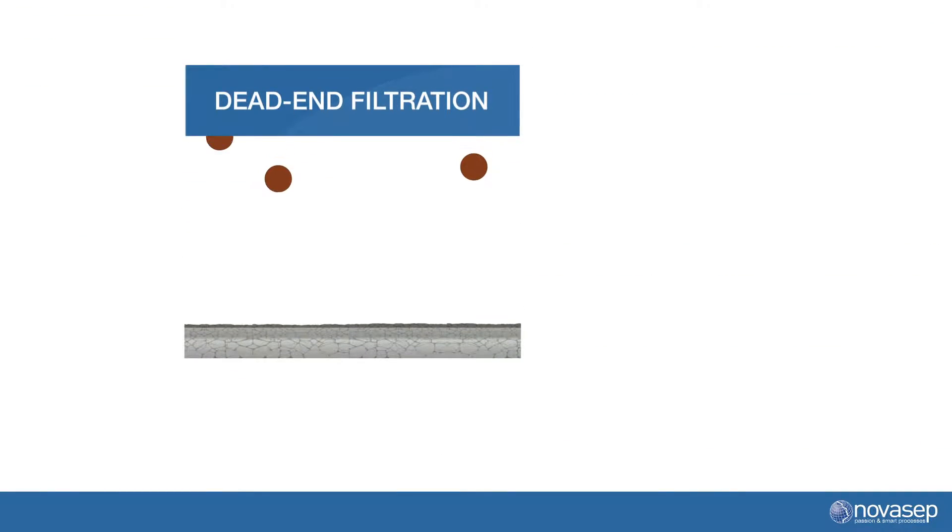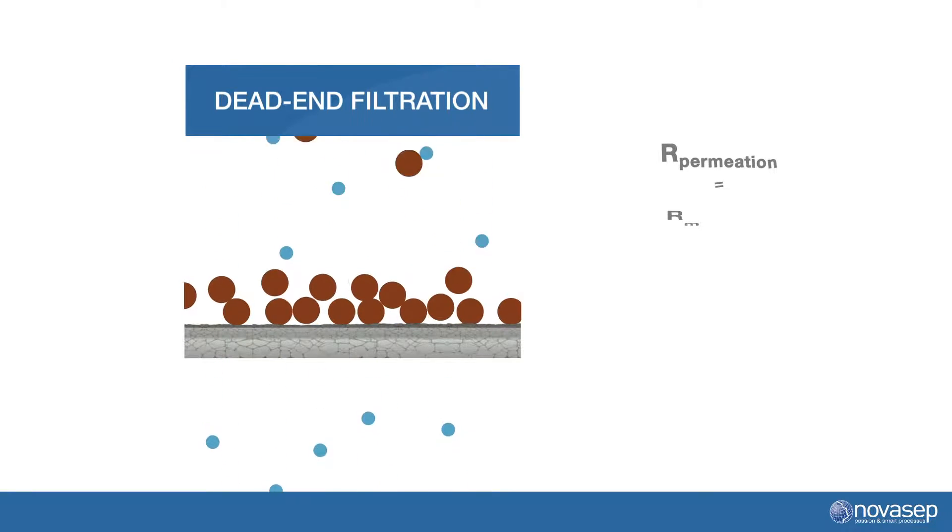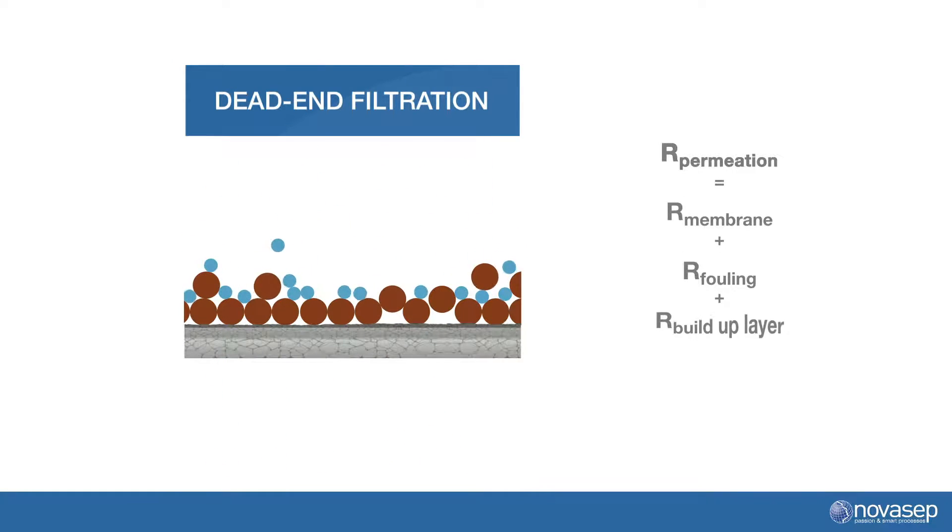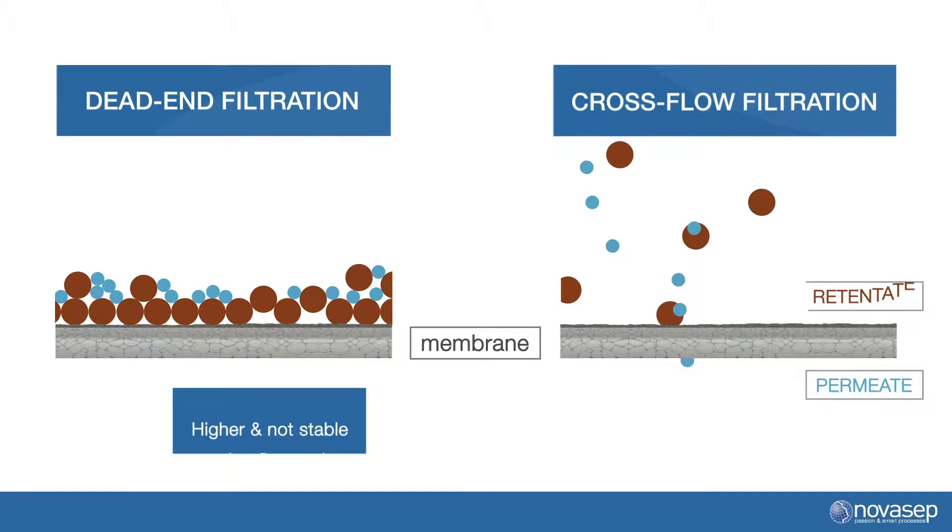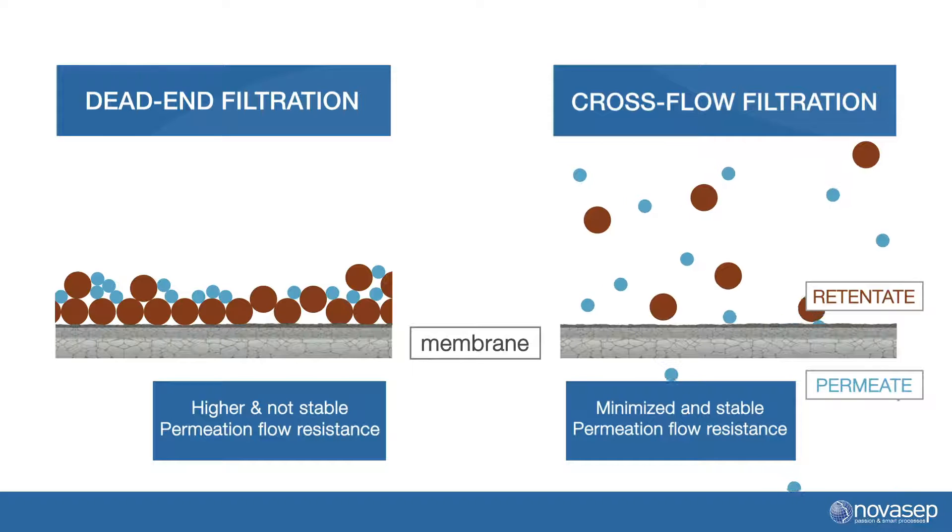Because it is what differentiates cross-flow filtration from dead-end filtration. The driving force of the permeate through the membrane is the difference of pressure between the two sides of the membrane, called the TMP or transmembrane pressure. Resistance to the permeate flow is a combination of the ceramic layer of the membrane itself fouling in the membrane and a build-up of a clogging layer on the feed retentate side of the membrane. The whole purpose of having a cross-flow is to erode continuously this clogging layer and get as little resistance to the flux as possible.